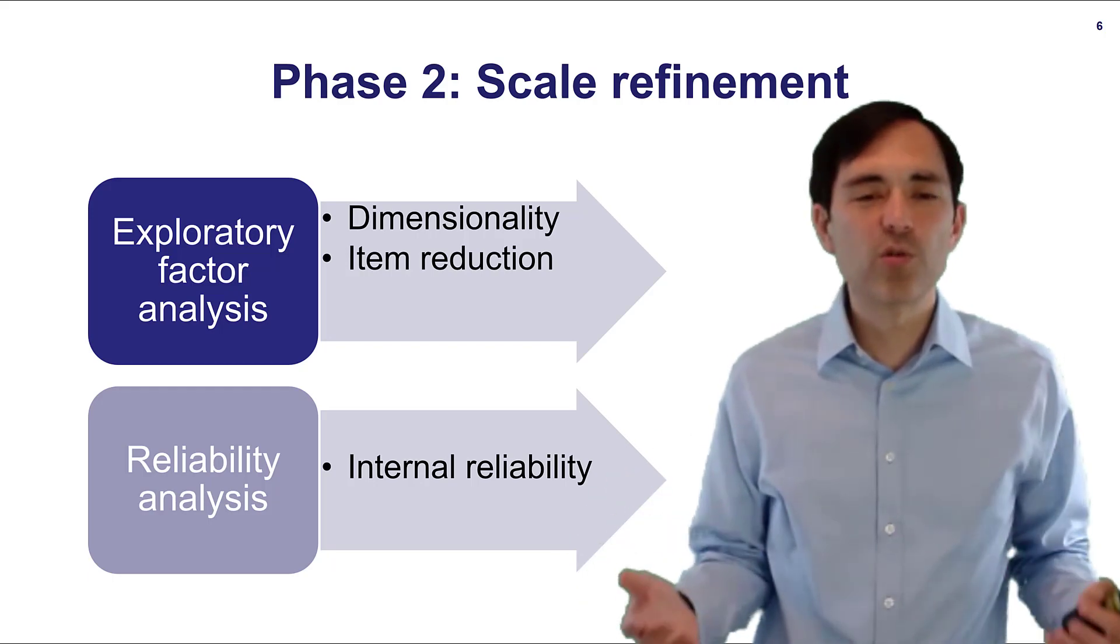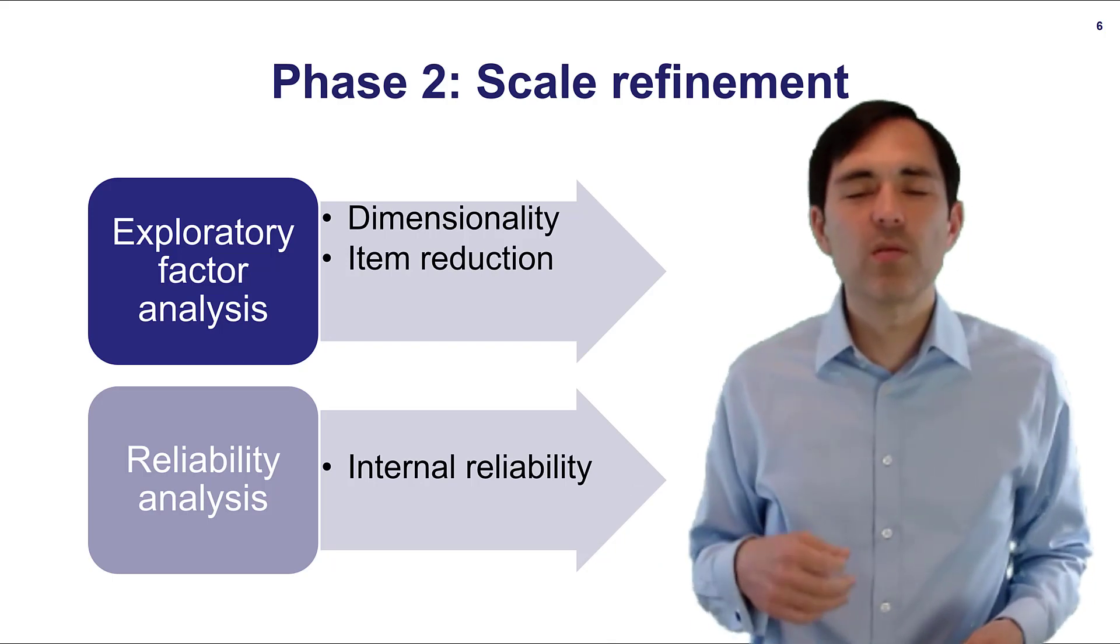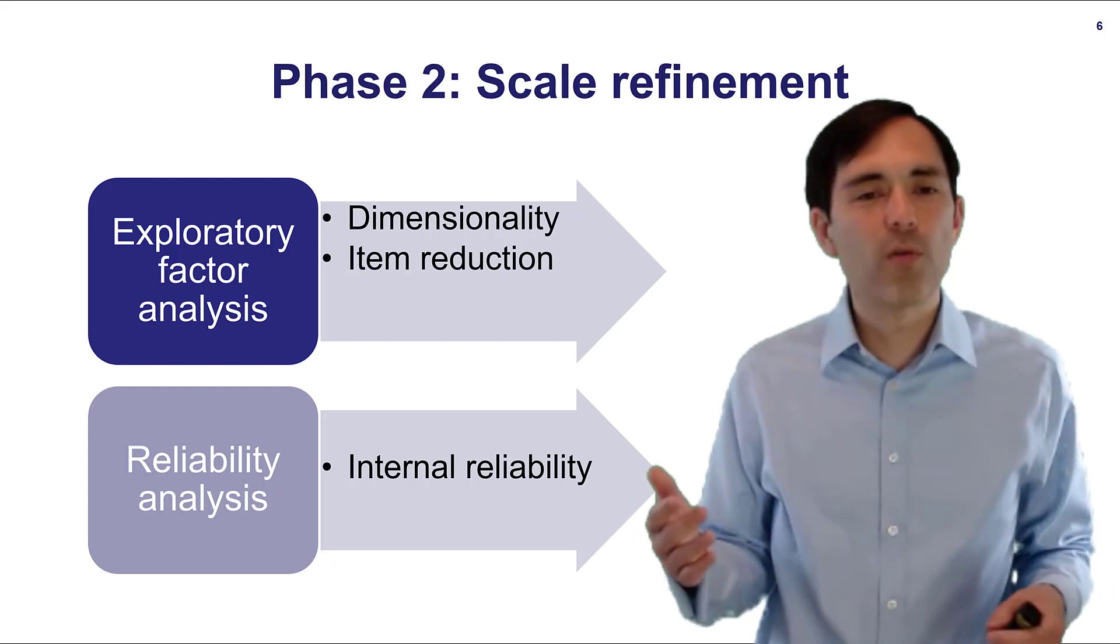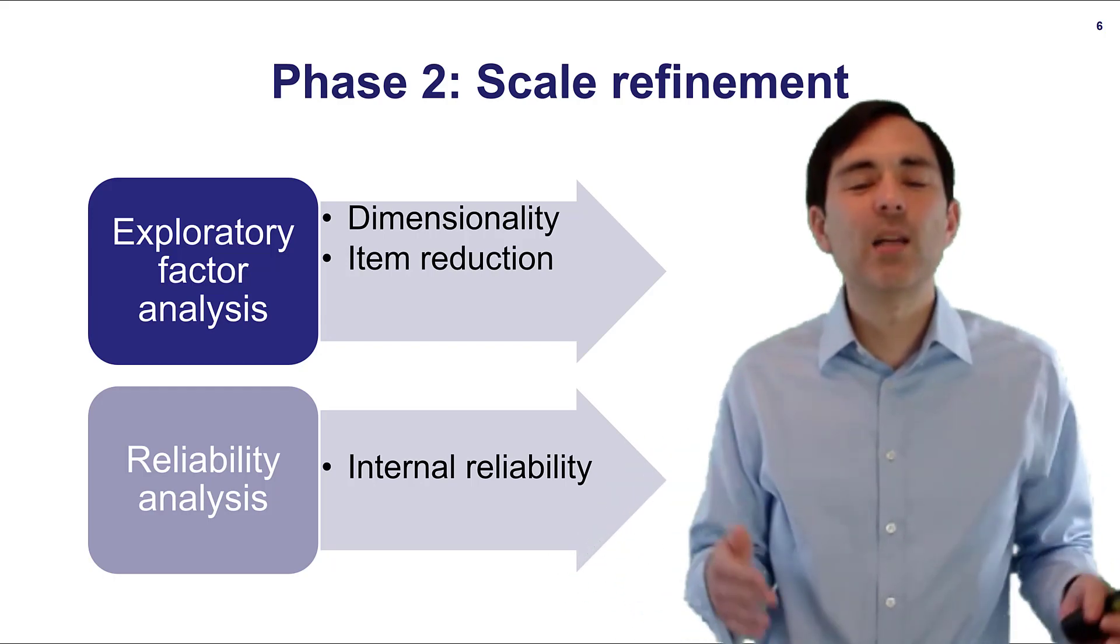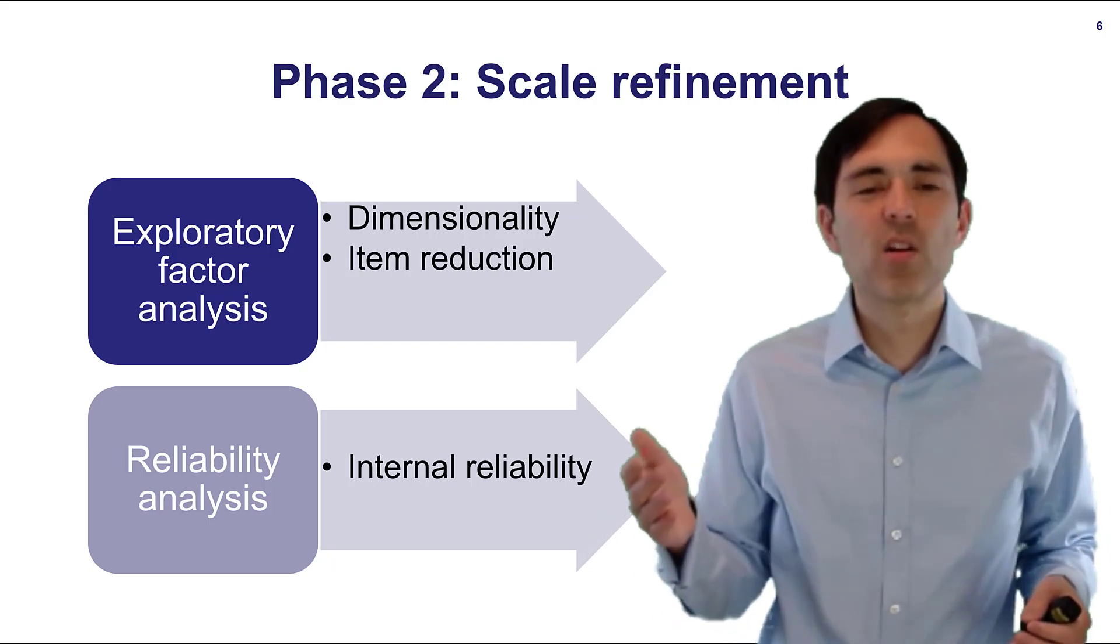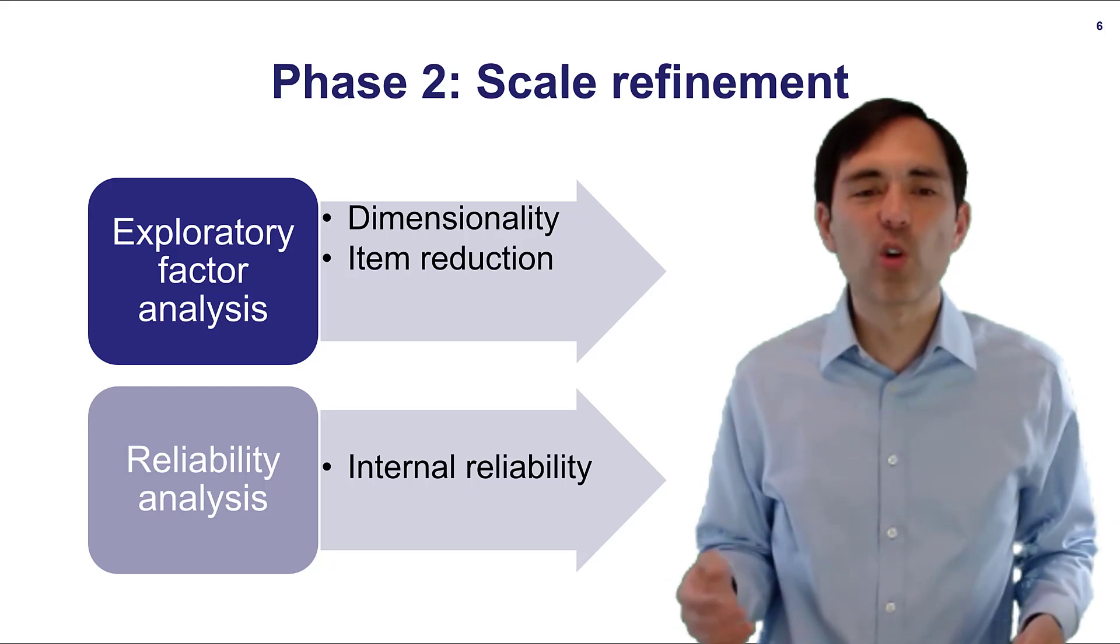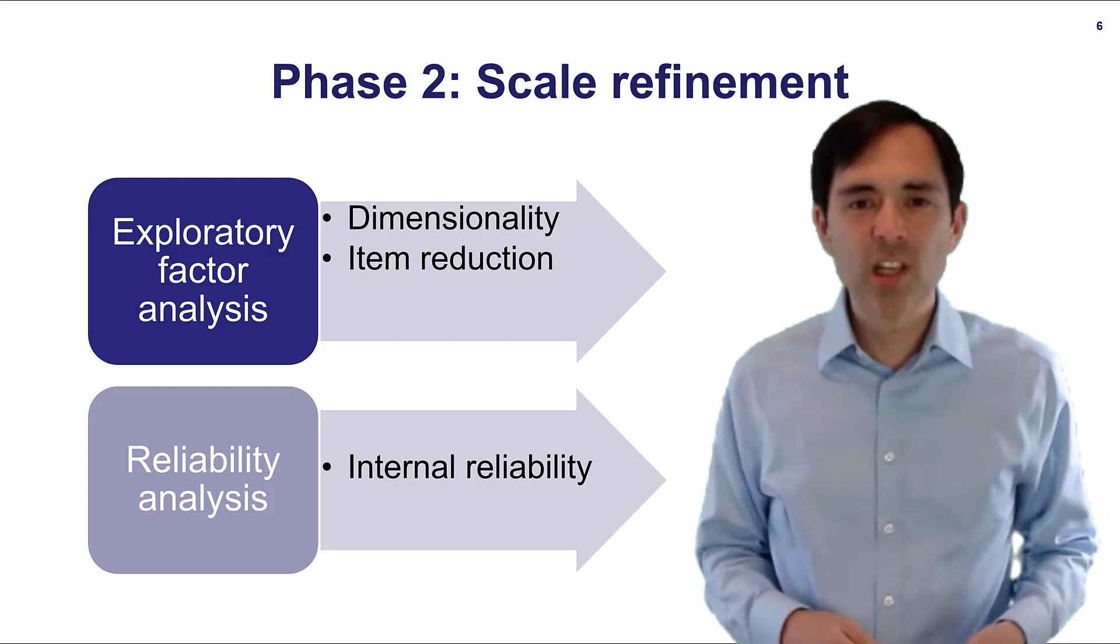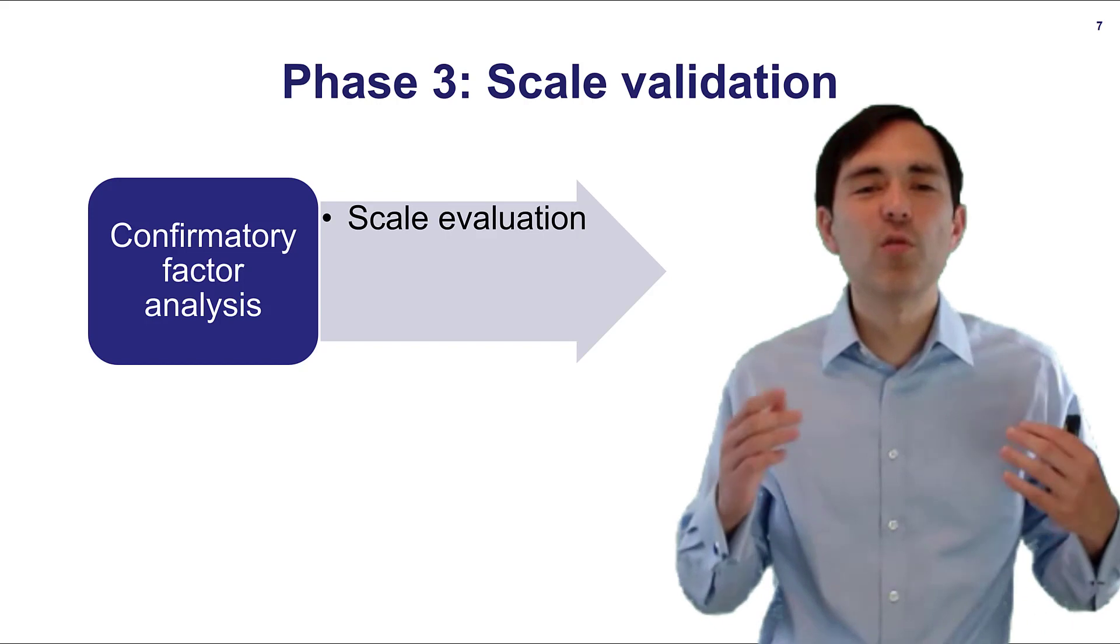It's very common that we drop items during this process. We would drop items if the factor loading on its respective factor is rather low maybe below 0.4 or below 0.5 and or if that item has a high cross loading with another dimension that it's not supposed to load on. At this stage also you will check for reliability or Cronbach's Alpha. It should be at least above 0.7. Now imagine we have completed phase two we can move on to phase three.